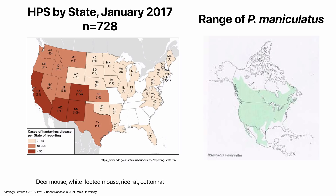CDC tracks hantavirus cases. The three cases in New York State were in campers who slept on platforms where mice had left dried, virus-laden feces. Serologically, we realize this virus has been around since 1959 — we just never noticed it before. So far in the U.S. there have been 728 cases of hantavirus pulmonary syndrome.